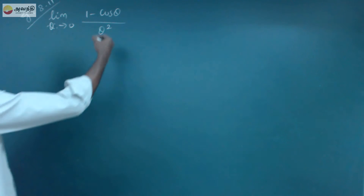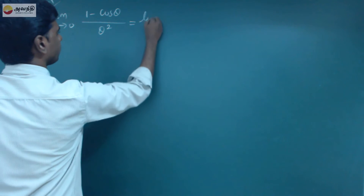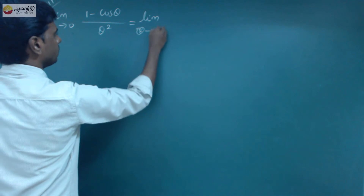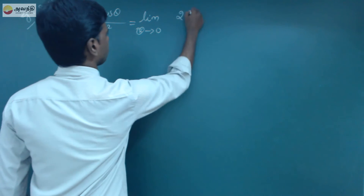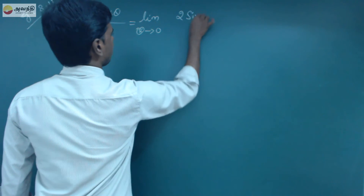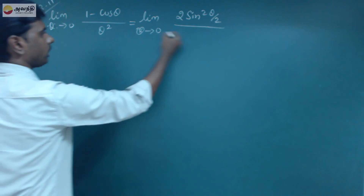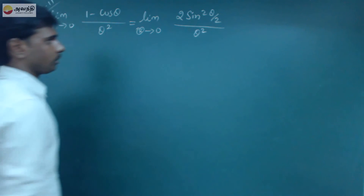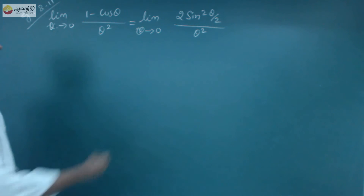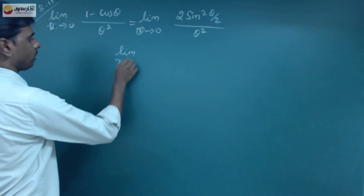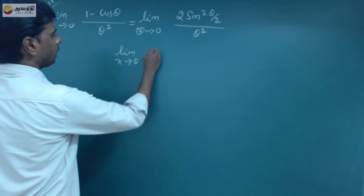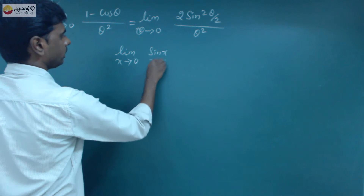So, what we can do — the sum we need to evaluate. We know from trigonometry that 1 minus cos theta equals 2 sin squared (theta by 2), and theta squared is in the denominator. We also know the formula: limit x tends to 0, sin x by x equals 1.